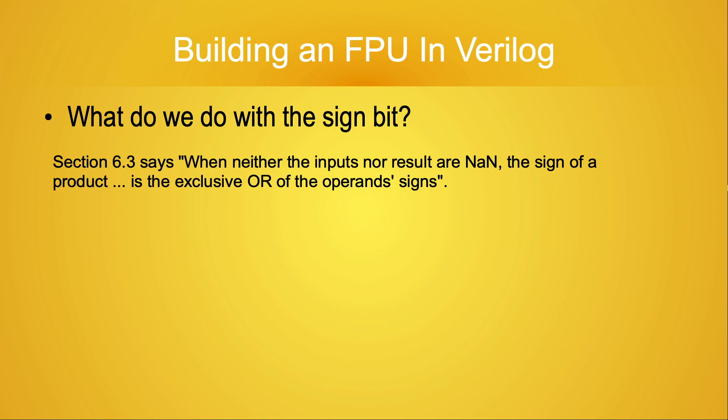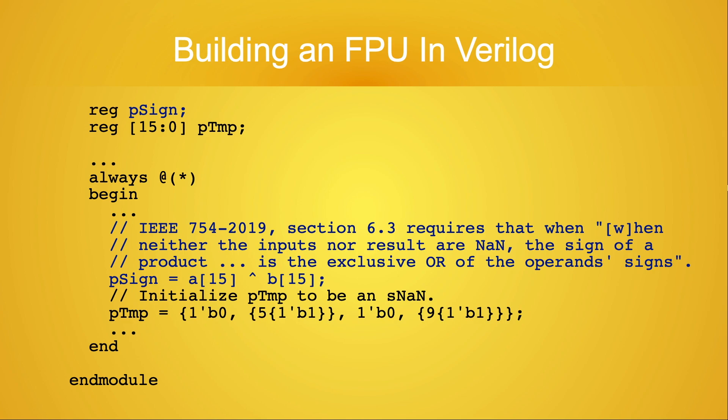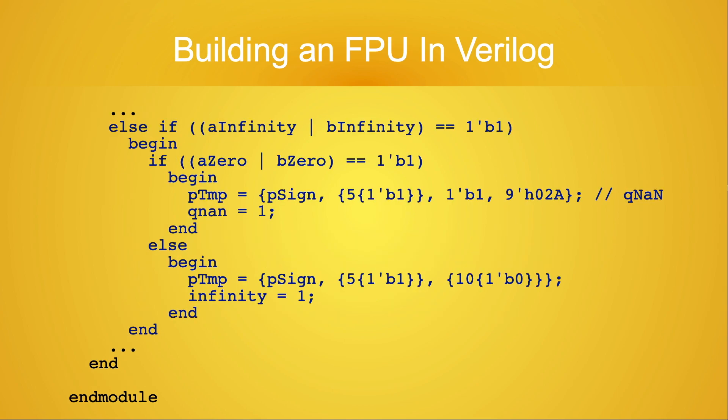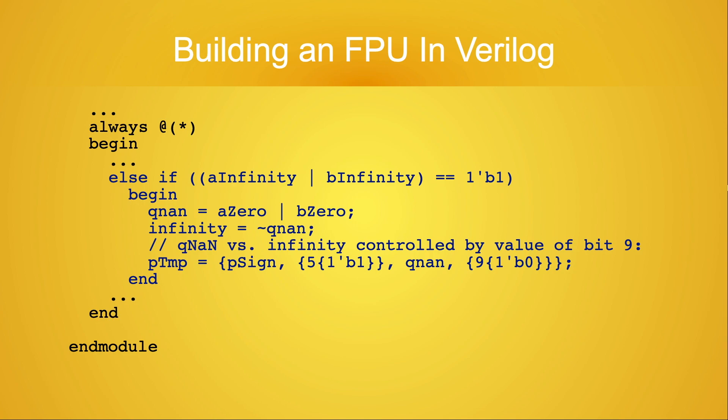The IEEE standard specifies that when neither the inputs nor result are NaN, the sign of a product is the exclusive OR of the operand signs. We need a place to save the result because we'll need it for other cases besides this one. I declared the reg p_sign and added a statement to initialize p_sign in the same place the code initializes ptemp. The code which handles multiplying by infinity looks like this.